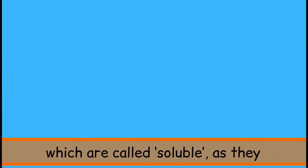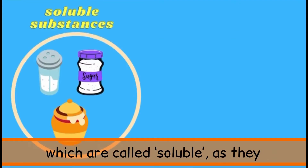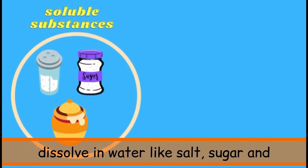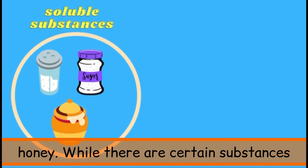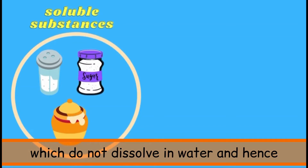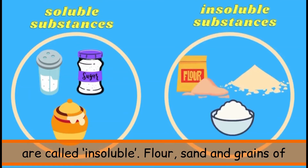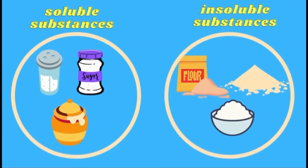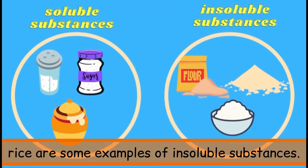There are certain substances which are called soluble, as they dissolve in water — like salt, sugar, and honey. While there are certain substances which do not dissolve in water and are called insoluble — like flour, sand, and grains of rice.